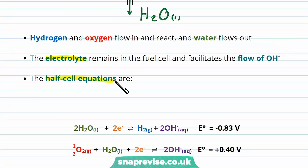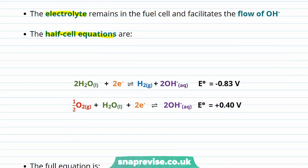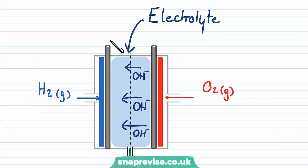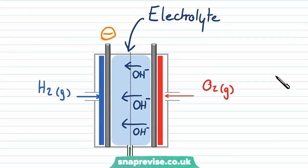The half cell equations for this system are as follows. On the hydrogen side of the electrode, which is the more negative, so forms the negative terminal in this system, so favours the backward reaction,